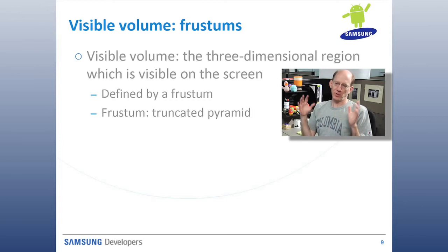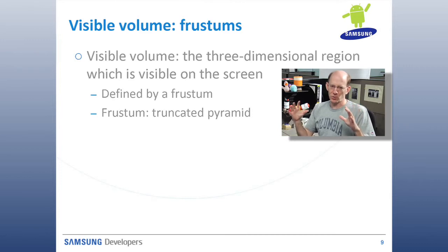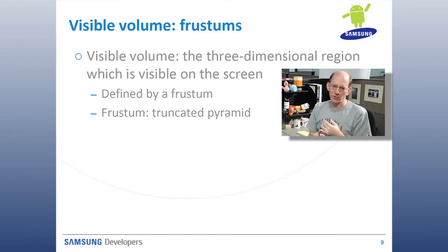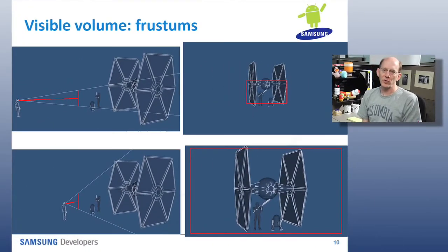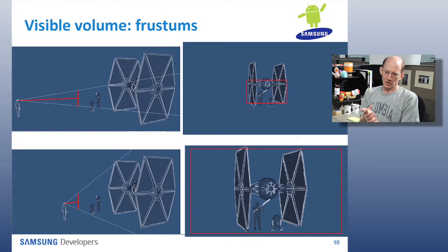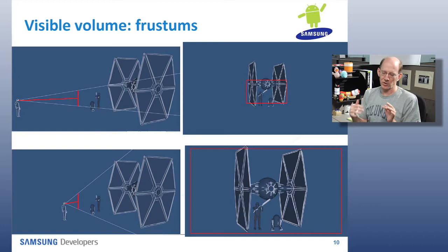Now that we've set up our scene and where we're looking at it from, we want to choose what volume of that scene we're actually going to expose to the viewer. This is going to be defined using this thing called a frustum. A frustum is not a word that people typically come across, but it actually has a pretty simple definition — it's just a truncated pyramid. So, visible volume and frustums: there are lots of ways you could define a truncated pyramid.